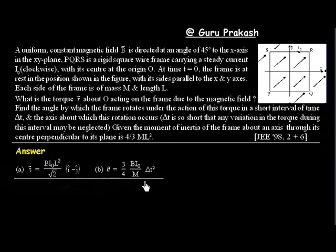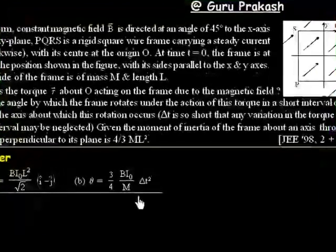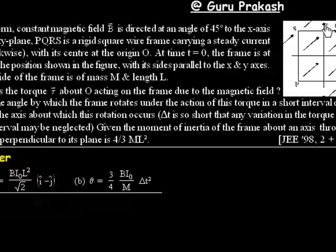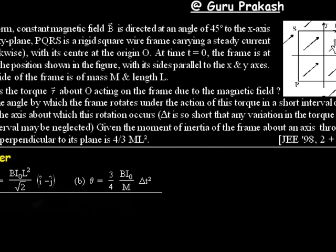This problem says we have a loop kept in the xy-plane — this is my x-axis and this is my y-axis. The loop carries a current I₀ in the direction S to R, R to Q, Q to P, P to S. The question also says there exists a magnetic field B directed along a diagonal axis, making an angle of 45 degrees with the x-axis.